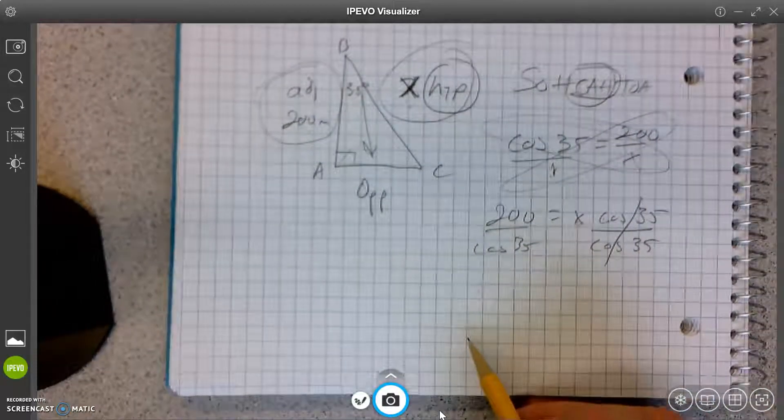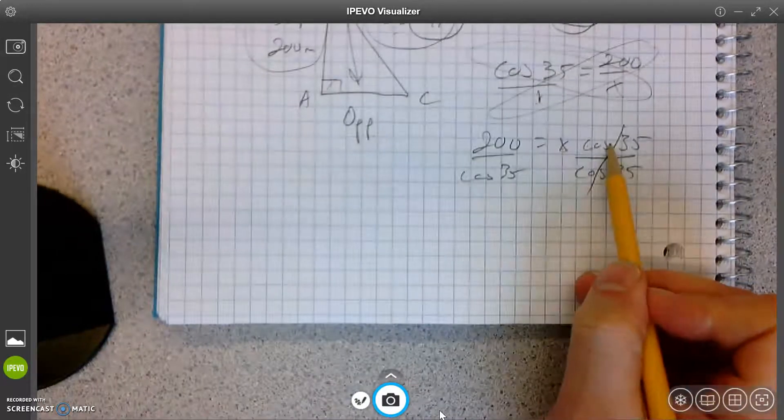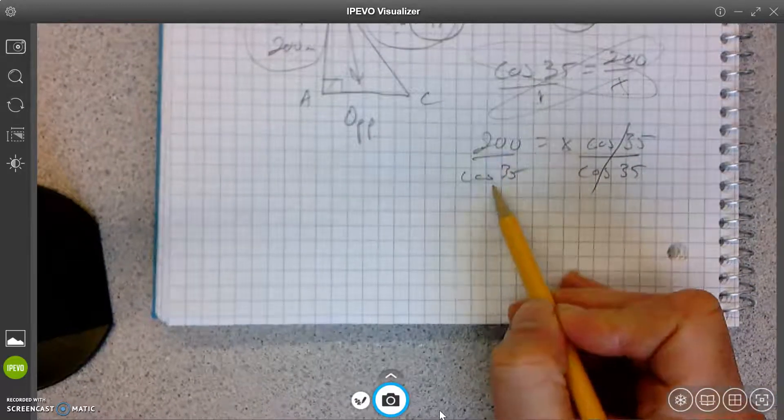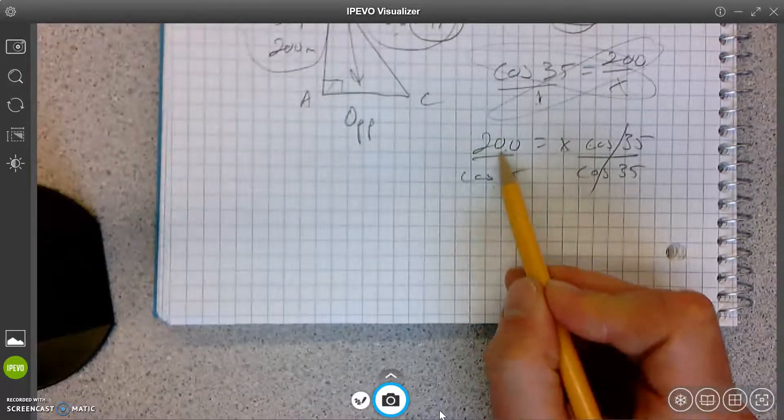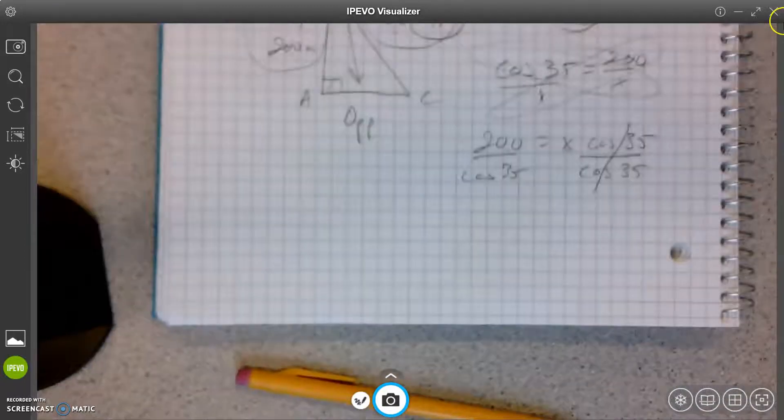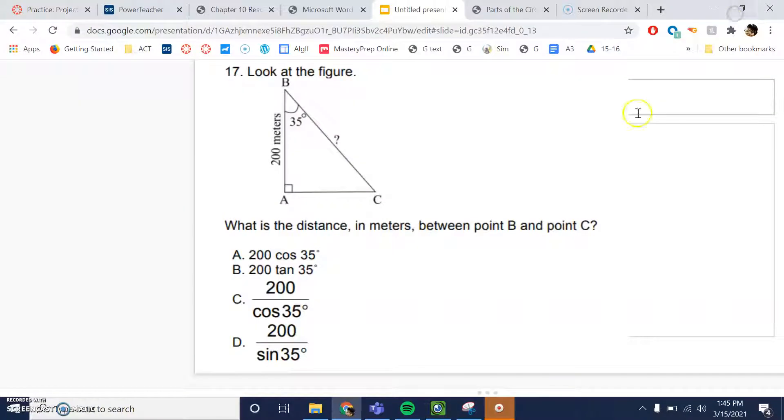Oh, there you go. So X, this is 1. So X equals tangent—sorry, 200. I know why I said tangent. 200 divided by cosine of 35. So that would be C. Nice job, everybody. Okay. And we'll do it. Let's do it. So that is an end. Thank you.